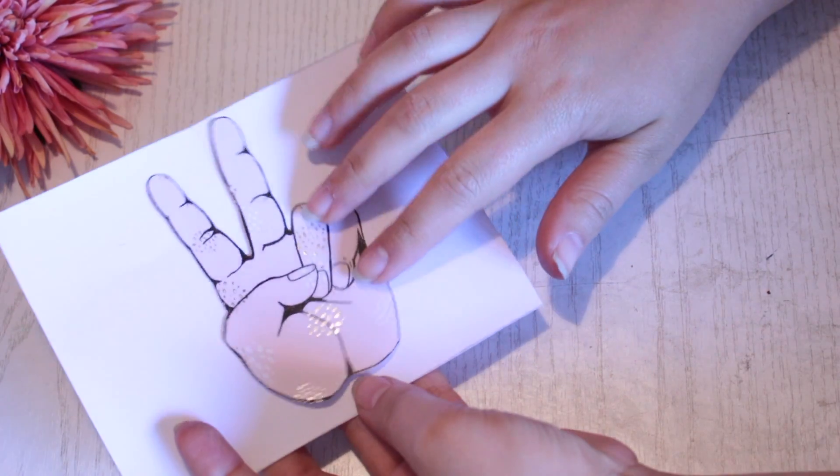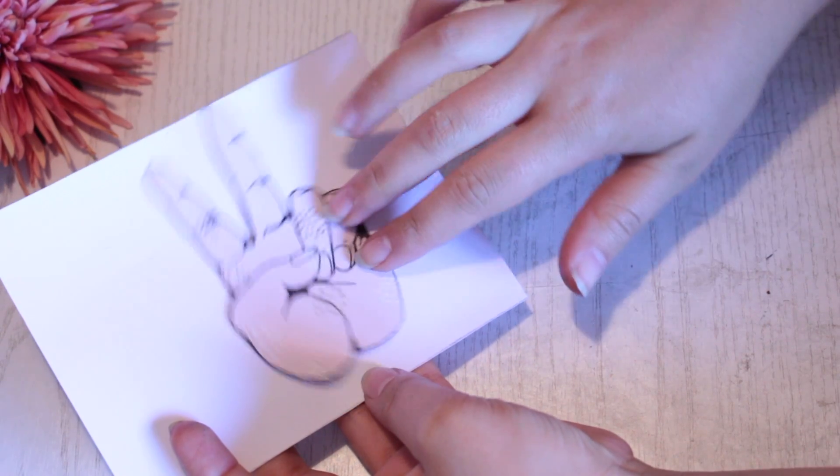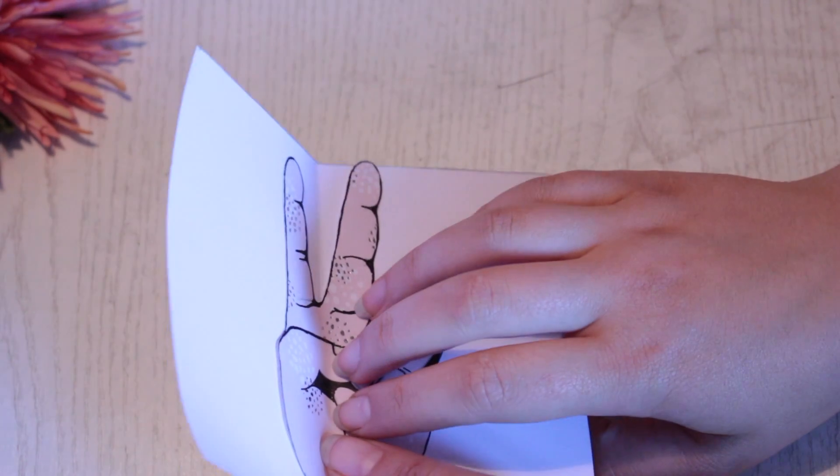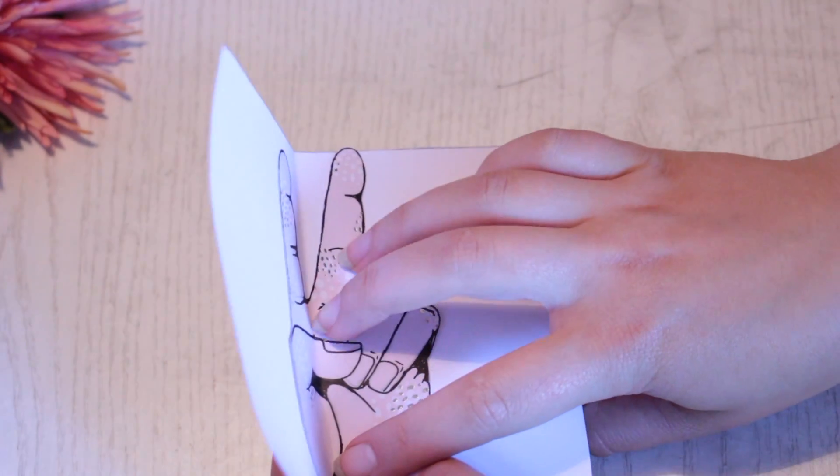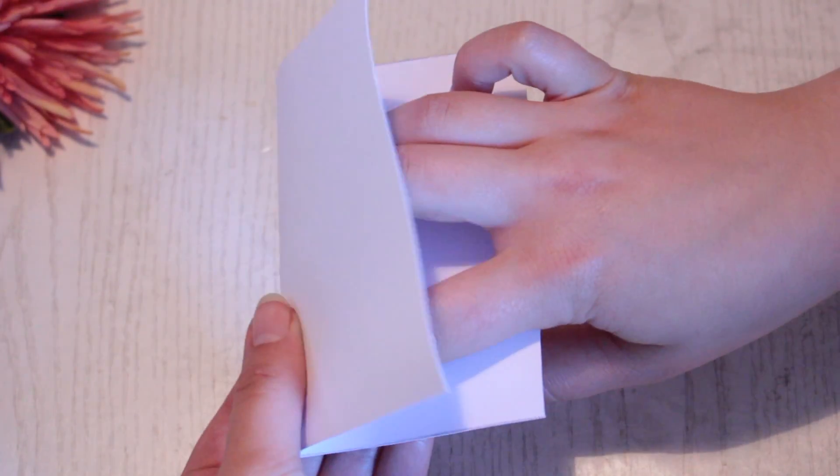Now you decide the angle of the hand inside the card. When you're happy with the placement, place the hand right into the middle score and then fold the card in half.